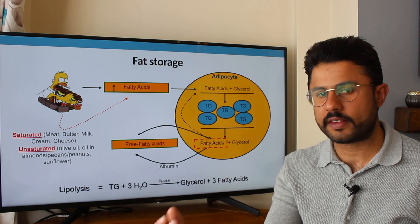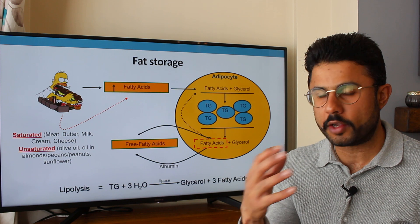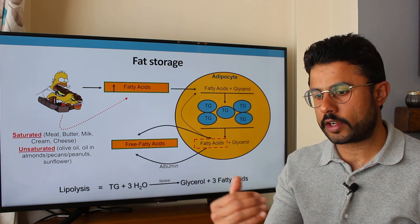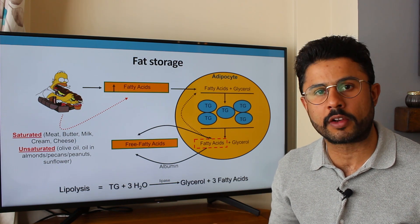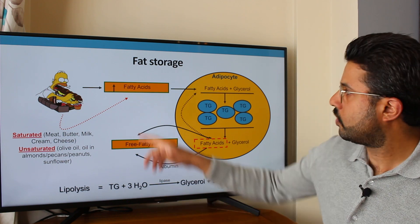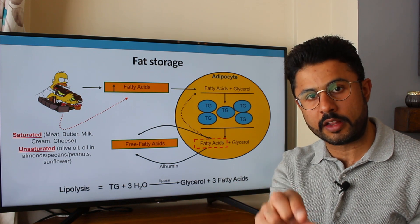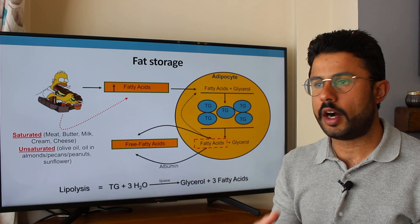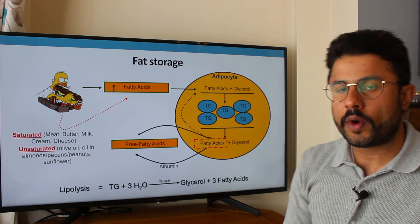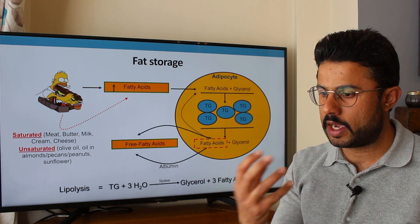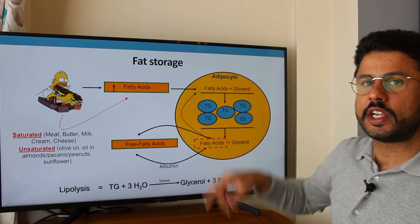Now we're thinking about how fat is actually stored in the adipose tissue itself. When you have a meal you're increasing the fatty acids circulating in your bloodstream. Let's say you've just had a very big lunch — you're going to have an increased number of free fatty acids. They're going to be transported to the adipose tissue via the blood circulation. The fatty acids will go inside the adipocyte and combine with a molecule called glycerol.